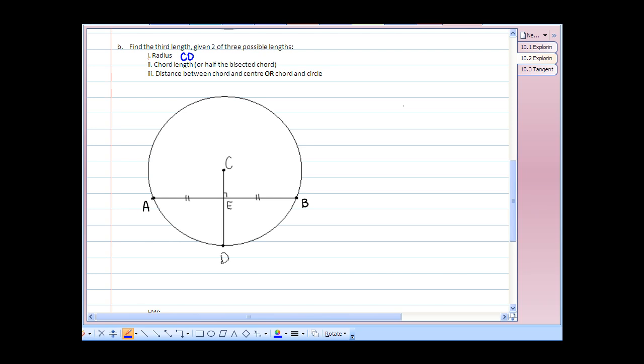The chord length, or half the bisected chord, so the full chord length being, of course, AB. Or the distance between the chord and the center. So, the chord to the center would be length CD. Or, the chord and the circle being ED.